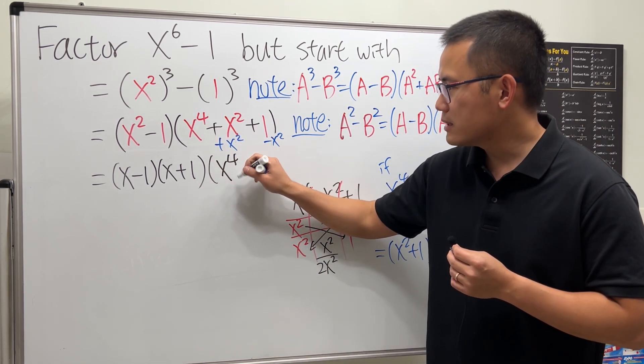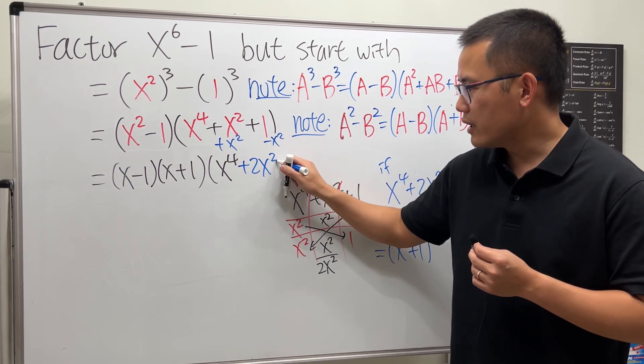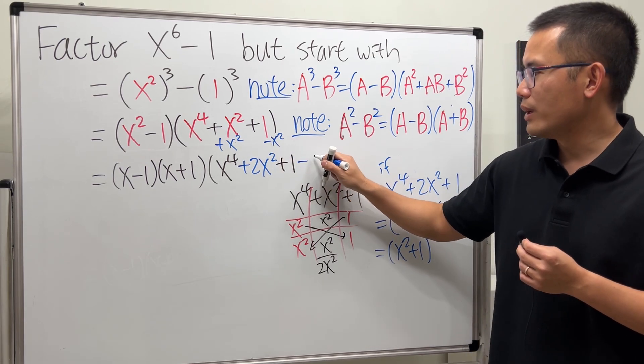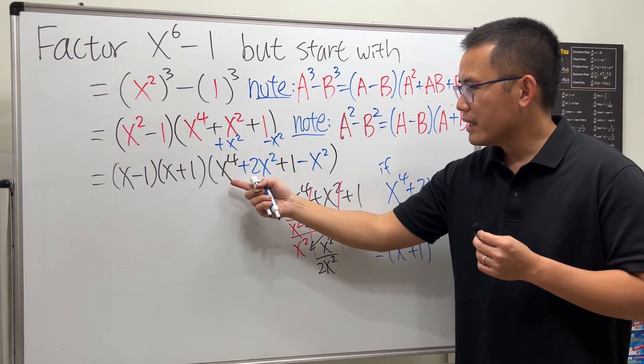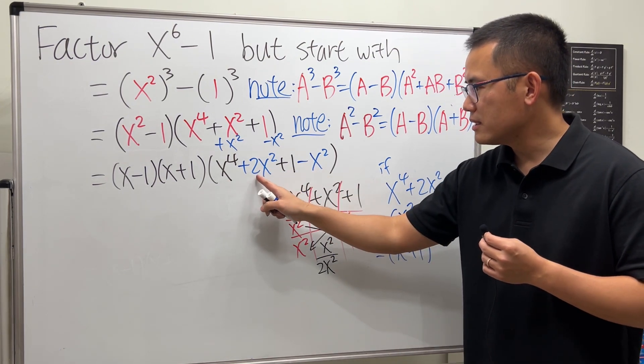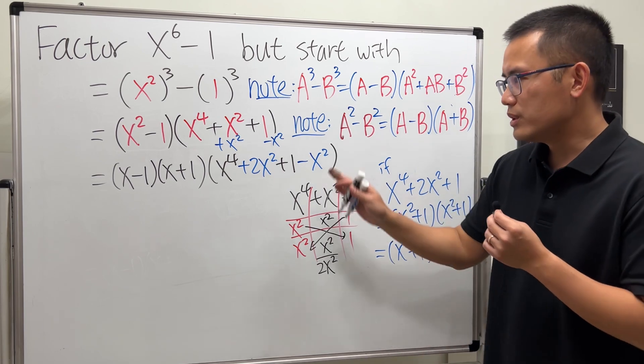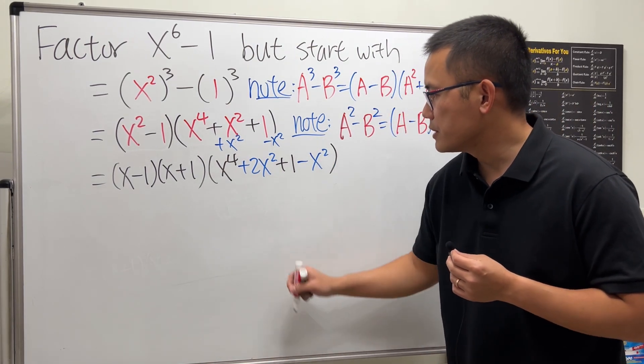Now we are going to look at this as x⁴ together, that's plus 2x², continue with a plus 1, and then finally write down the minus x². Have a look, if you look at the inside, combining this and that, don't we get the original back? Yes, so we didn't change anything.